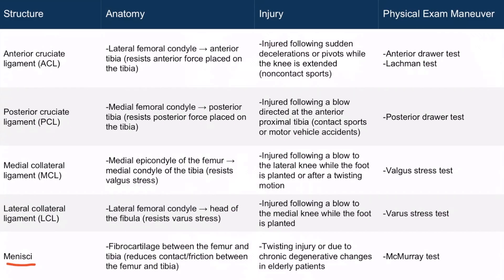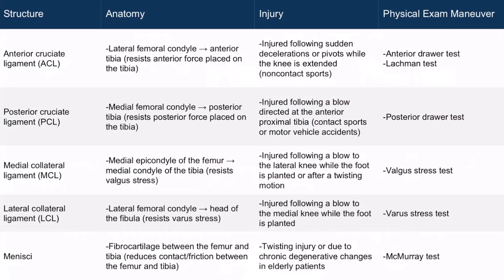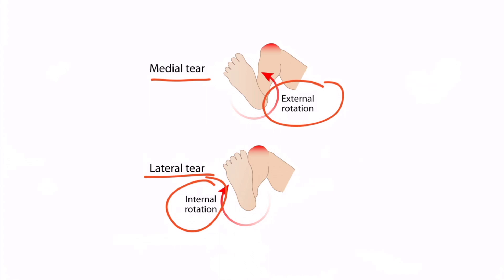The menisci are fibrocartilaginous pads between the femur and the tibia that function to reduce contact and friction between the two bones. From the overview image, you can see the medial meniscus and the lateral meniscus. These often present following a twisting injury, or may also be seen in elderly patients due to chronic degenerative changes. The exam maneuver used to identify a meniscal injury is the McMurray test. The leg is externally and internally rotated while simultaneously flexed and extended. Pain at the knee during external rotation indicates a medial meniscal tear, whereas pain during internal rotation indicates a lateral meniscal tear.